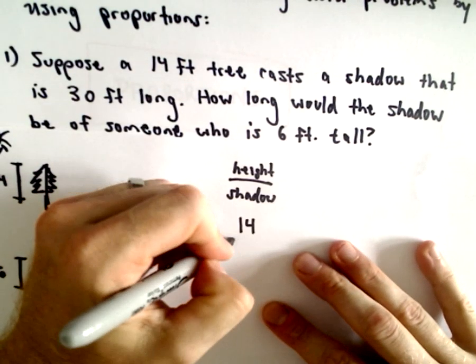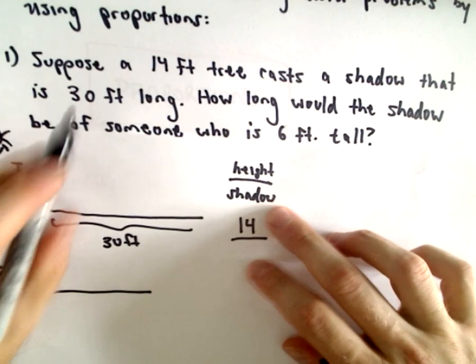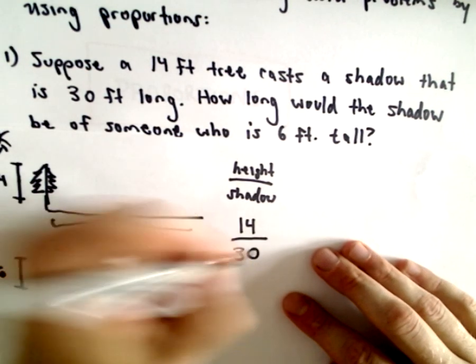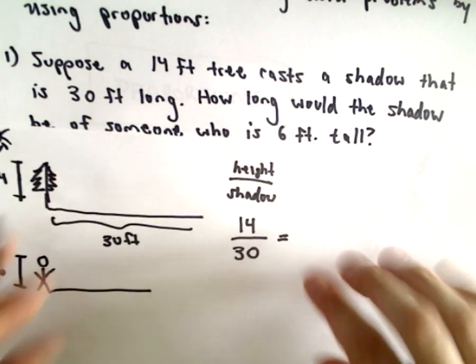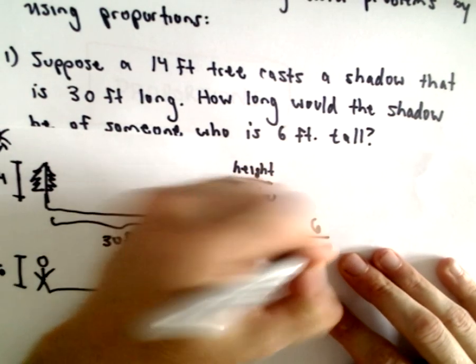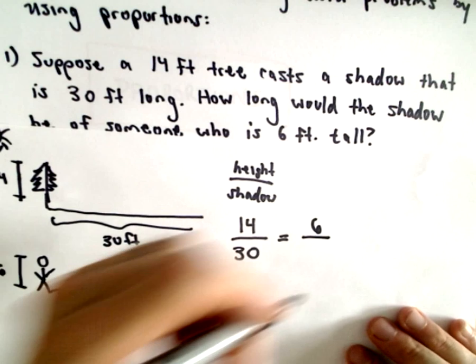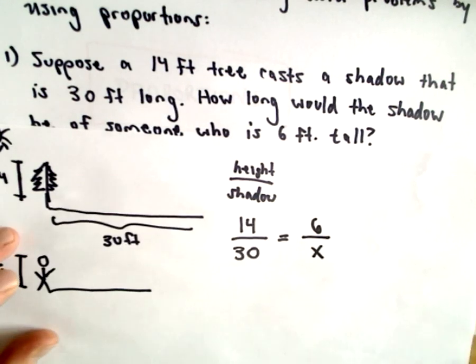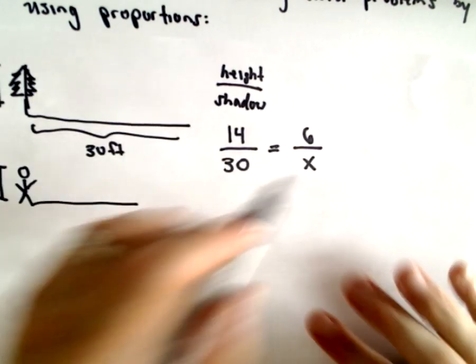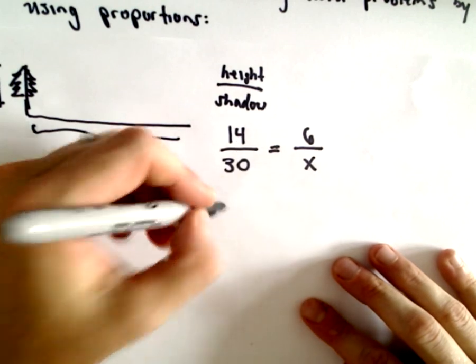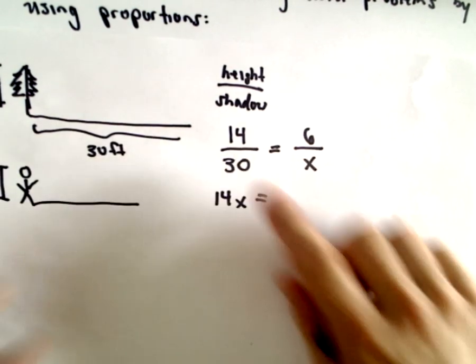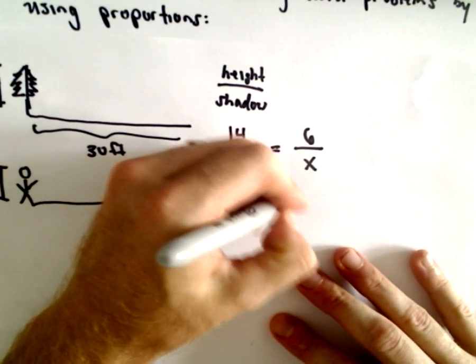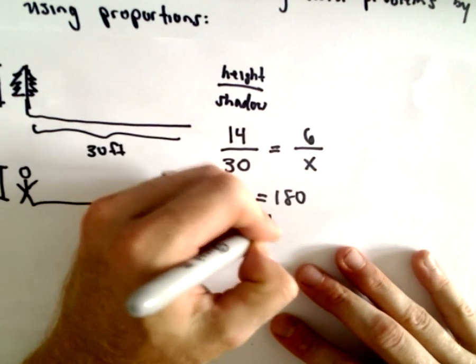We've got somebody that's about 6 foot tall, and we want to know how long their shadow is. Looking at the beginning problem, I notice that the shadow is more than twice as long as the tree. So I know that the shadow should at least be over 12 feet. Here comes our proportion. Let's think about height to shadow. The tree is 14 feet to its shadow length of 30.